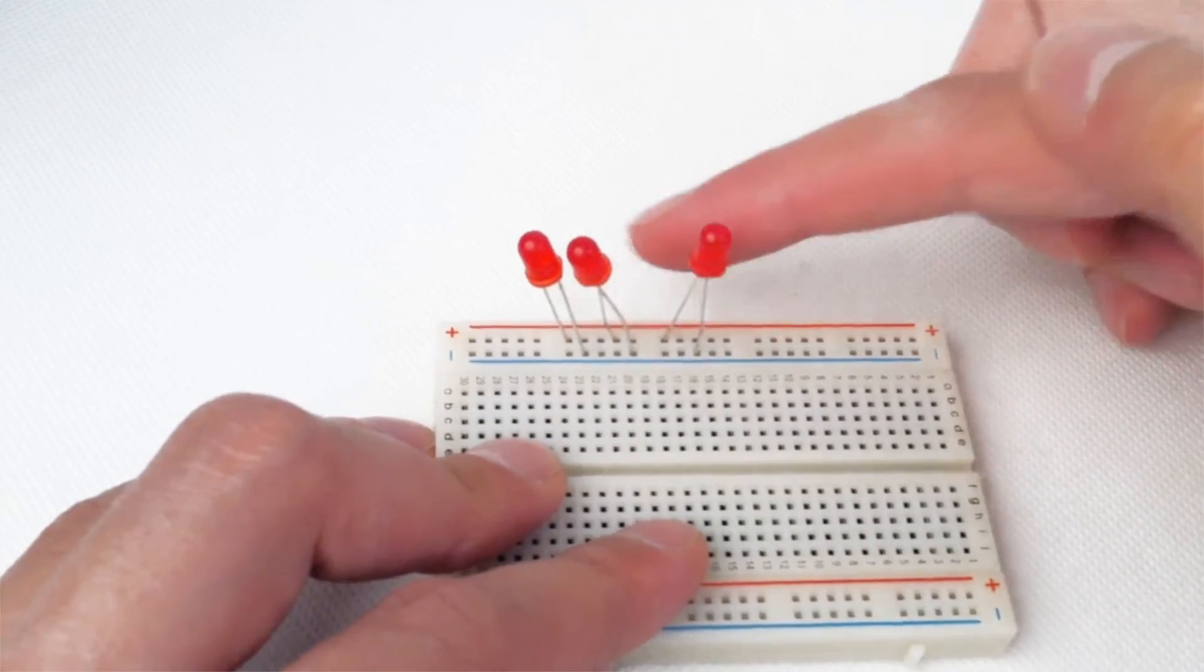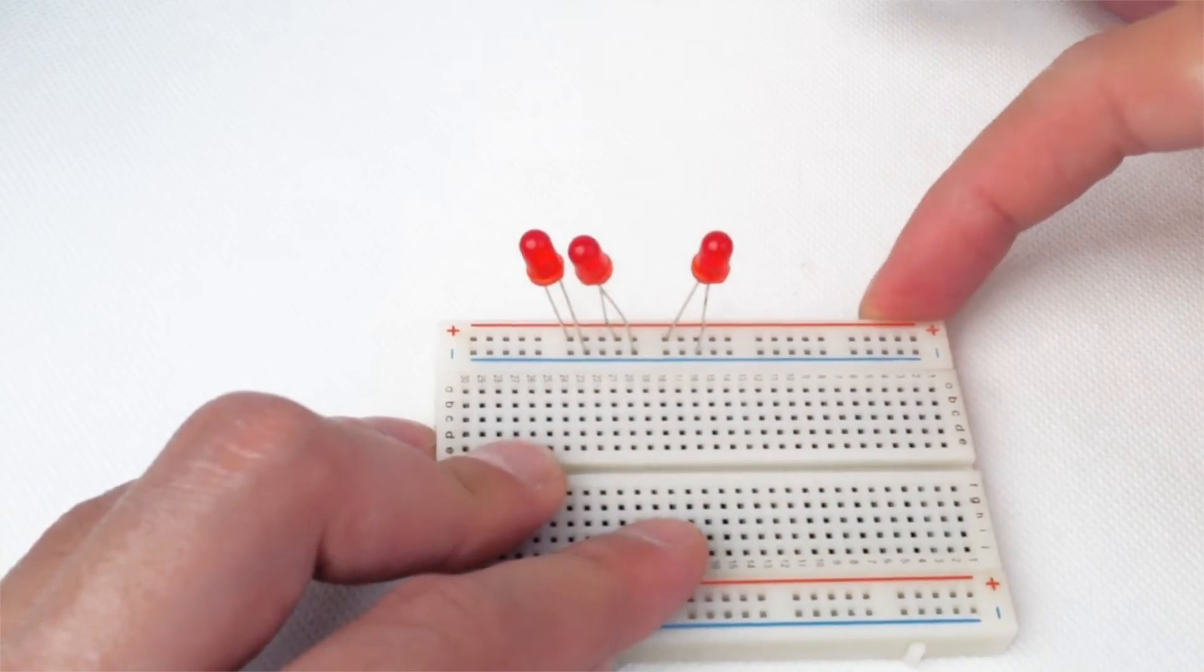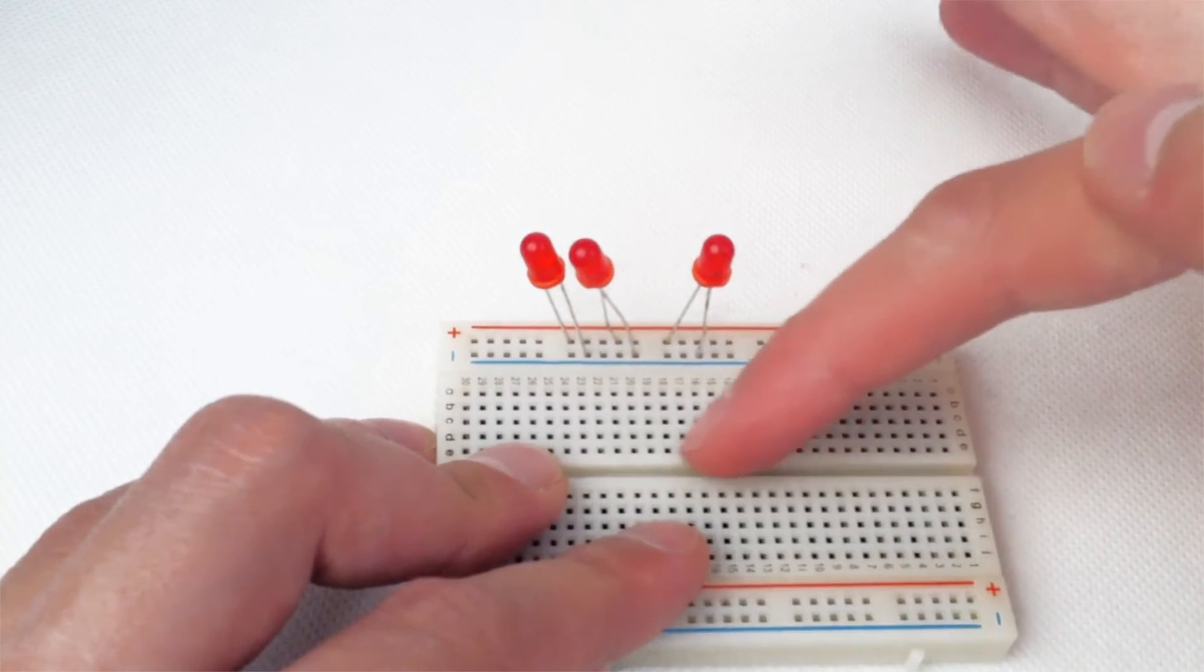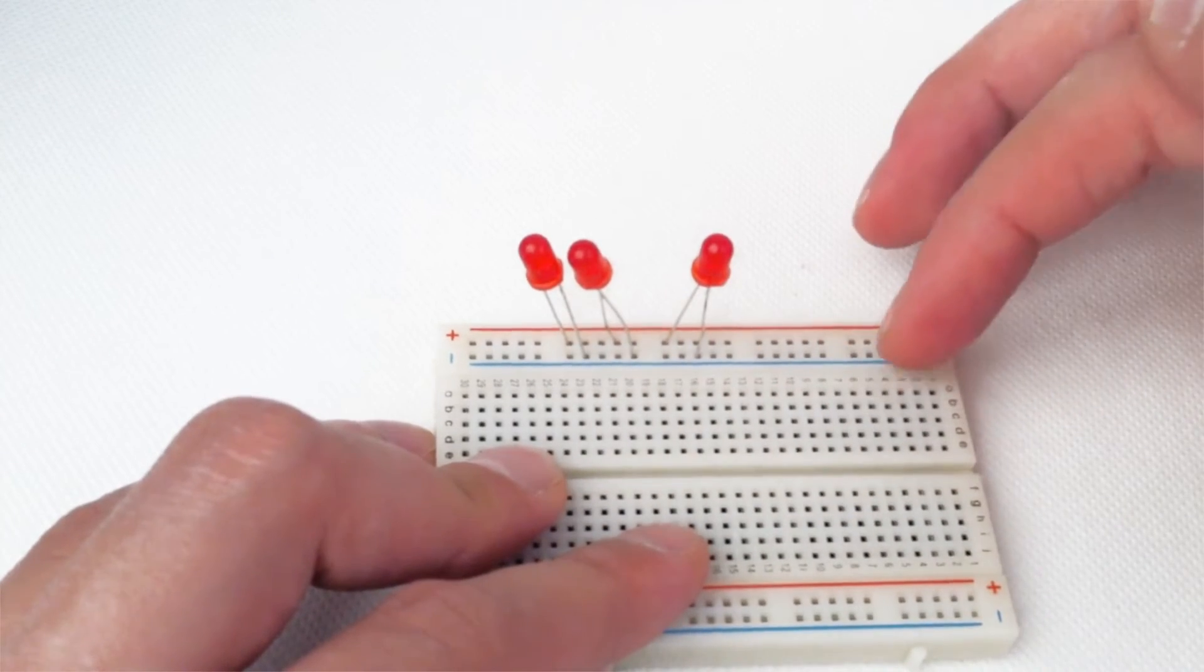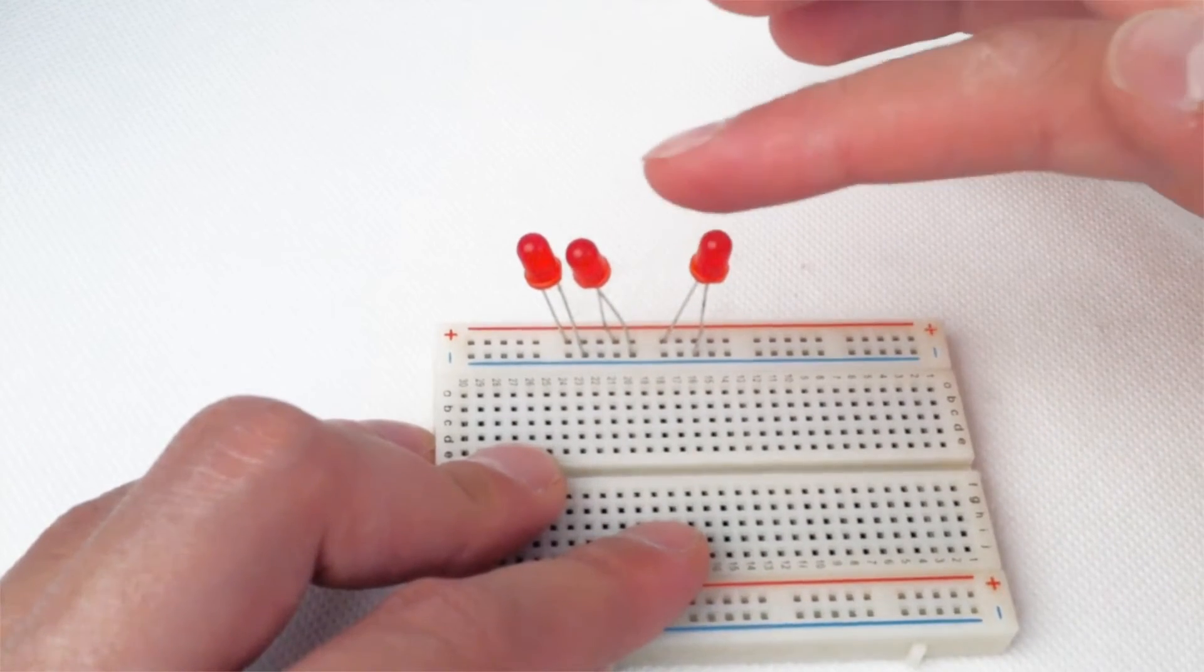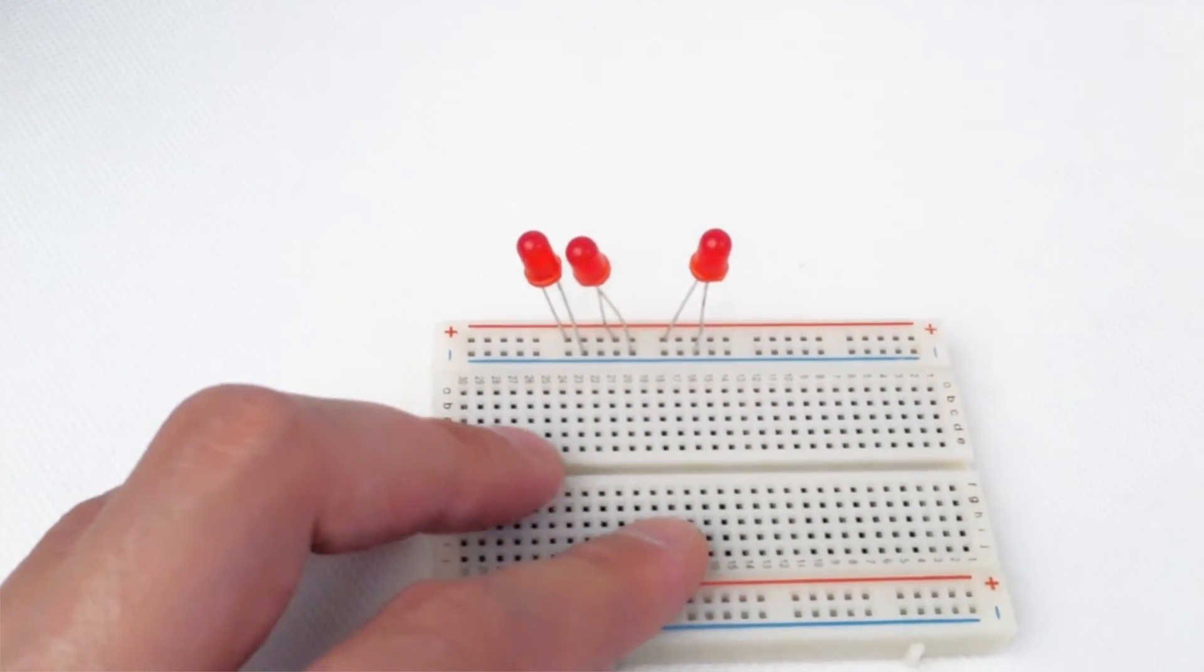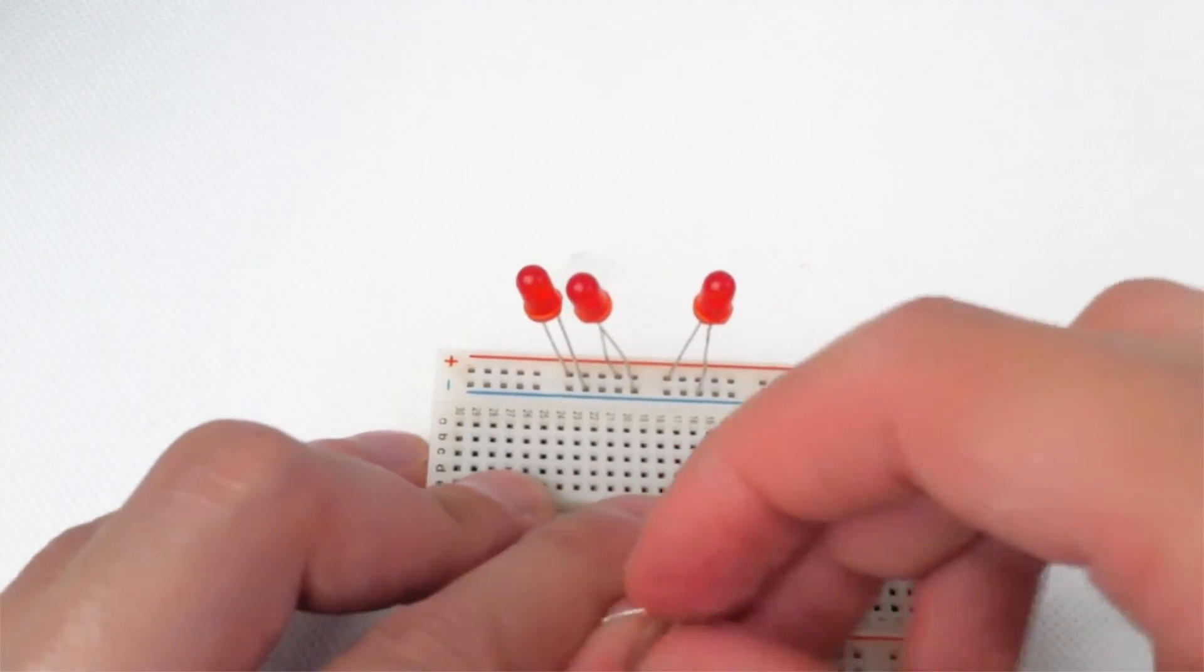The LEDs are separately connected to the power source, so they're connected in parallel. If power had to flow through each other, they would be connected in series. We'll start with our 1000 ohm resistor just to make sure the LEDs don't fry.